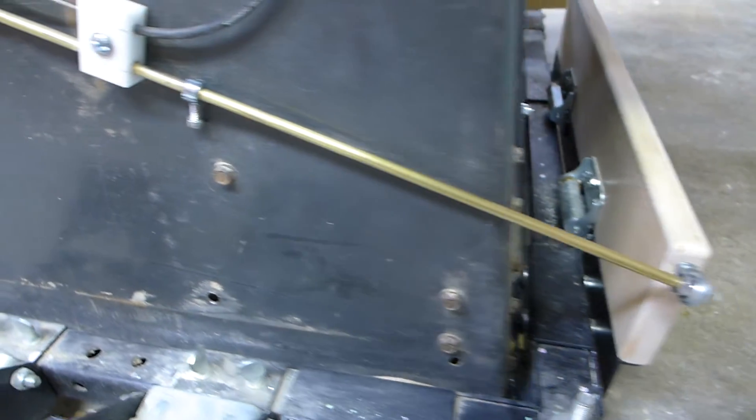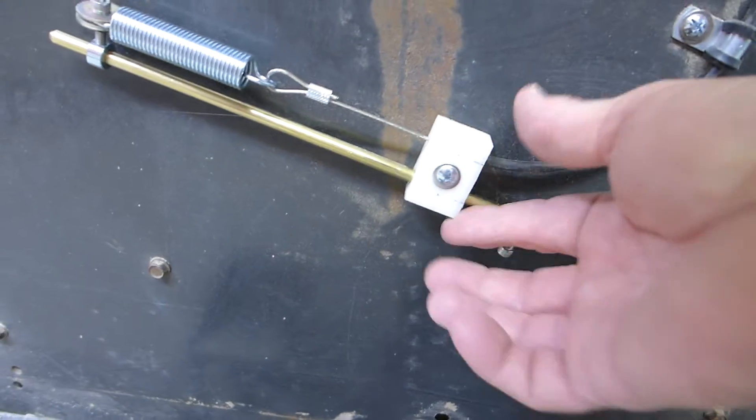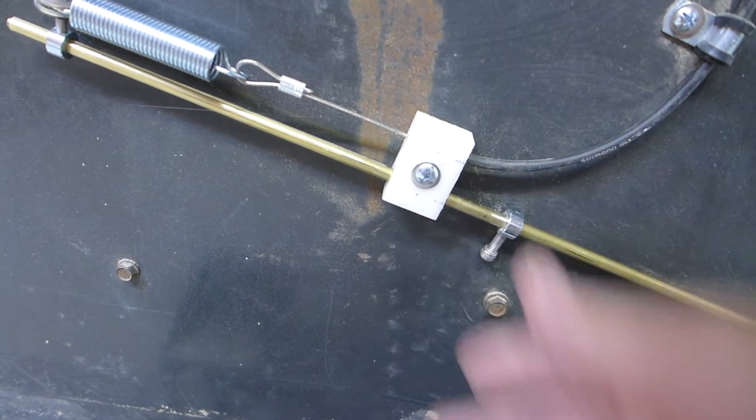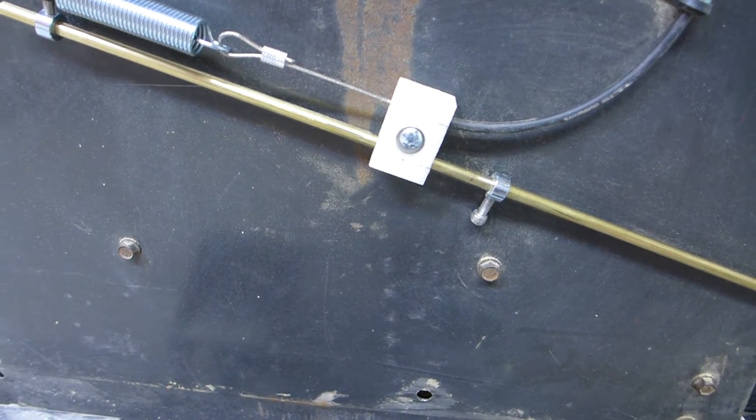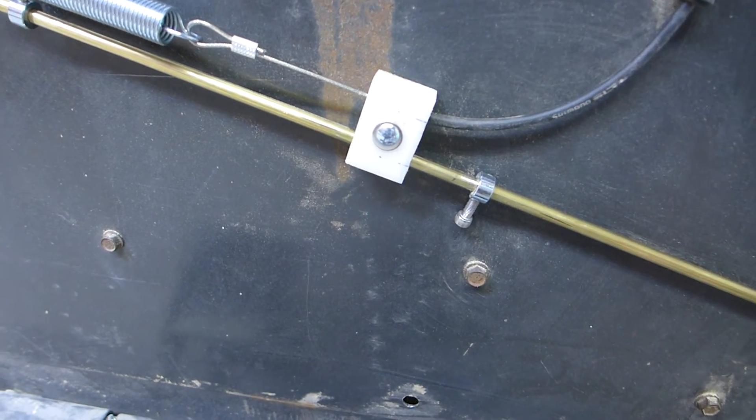This rod then passes through the Delrin block. Delrin is self lubricating so for years of service free of binding, that's a good material to use there.